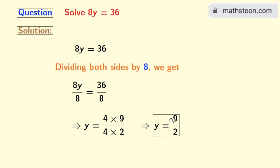As 9 by 2 cannot be simplified further, so we have y equal to 9 by 2 as our final answer.